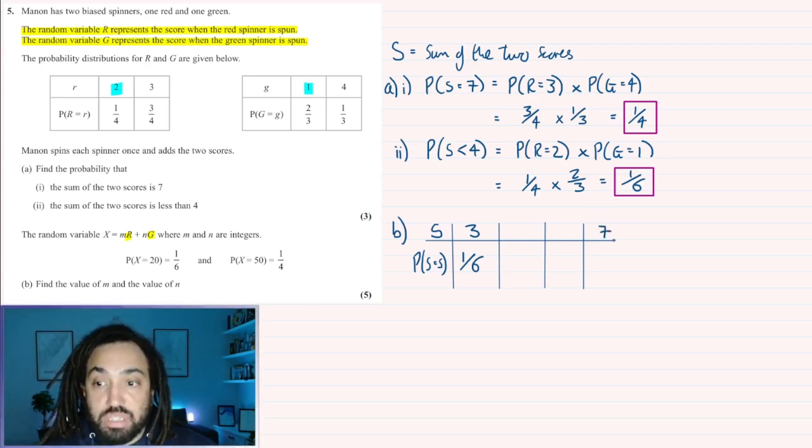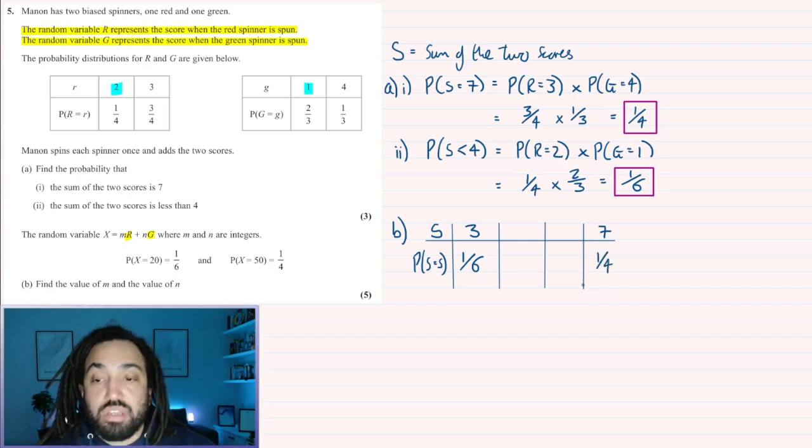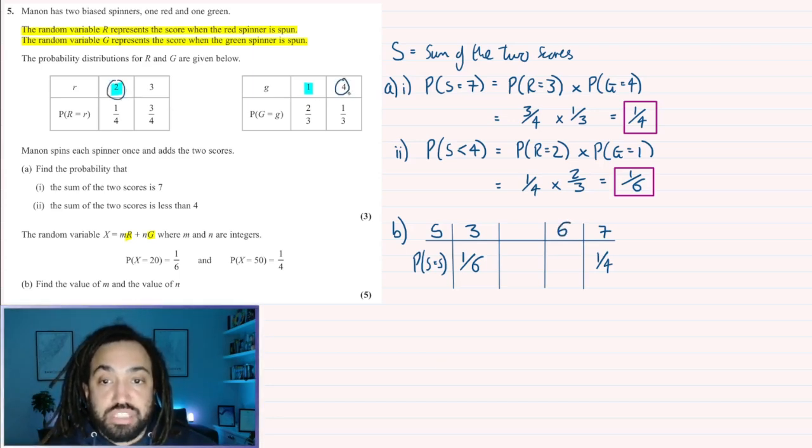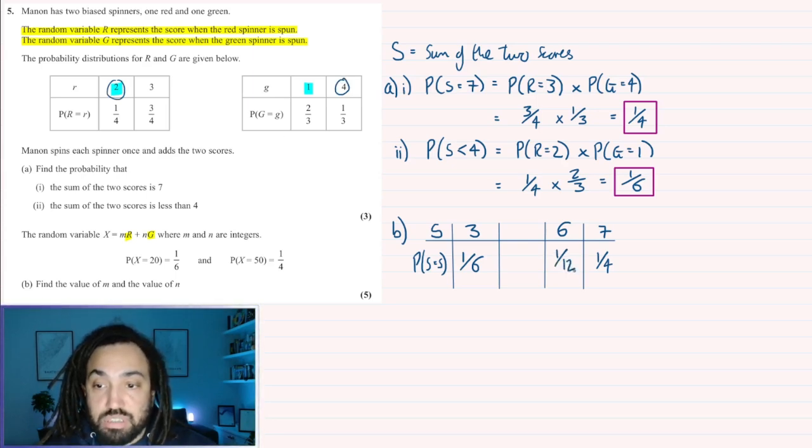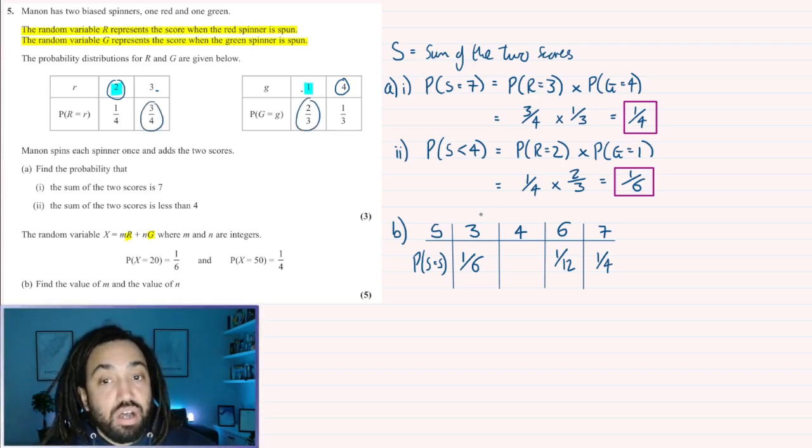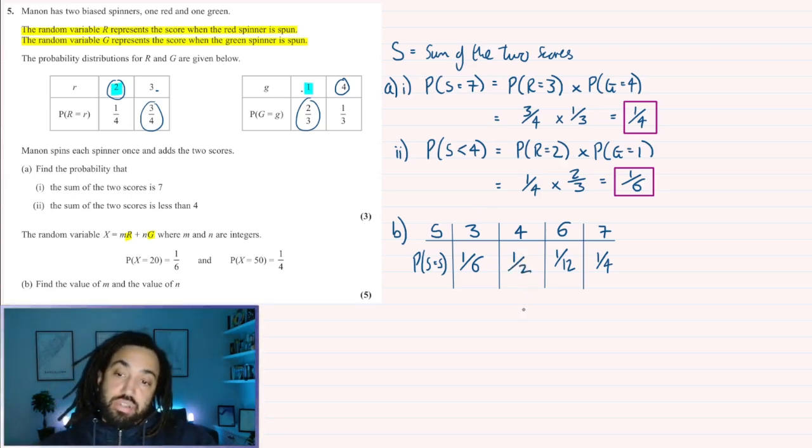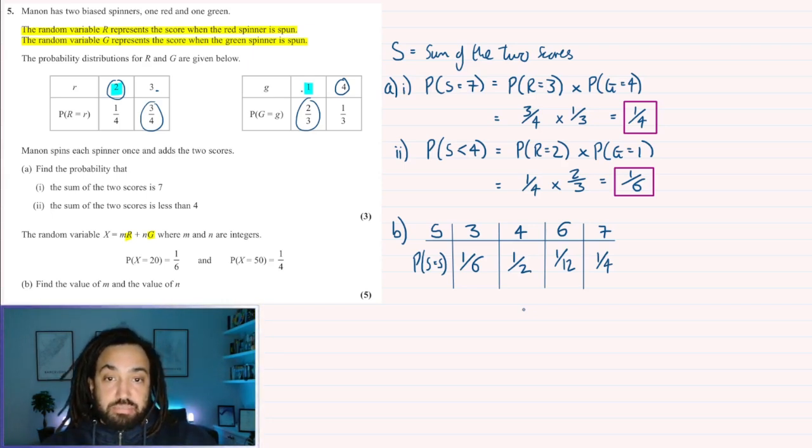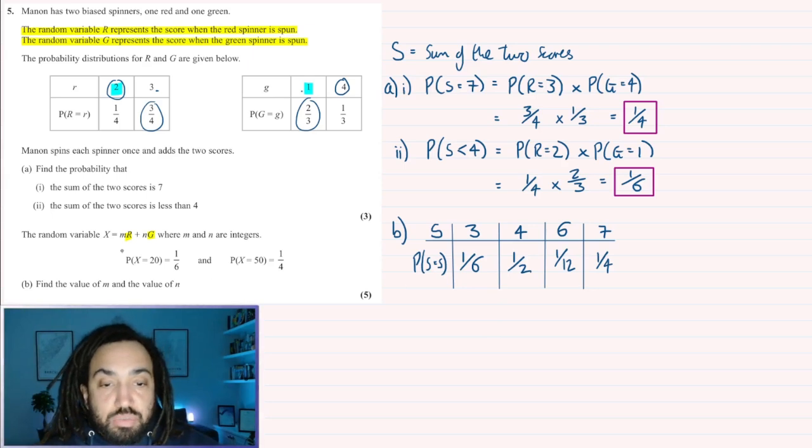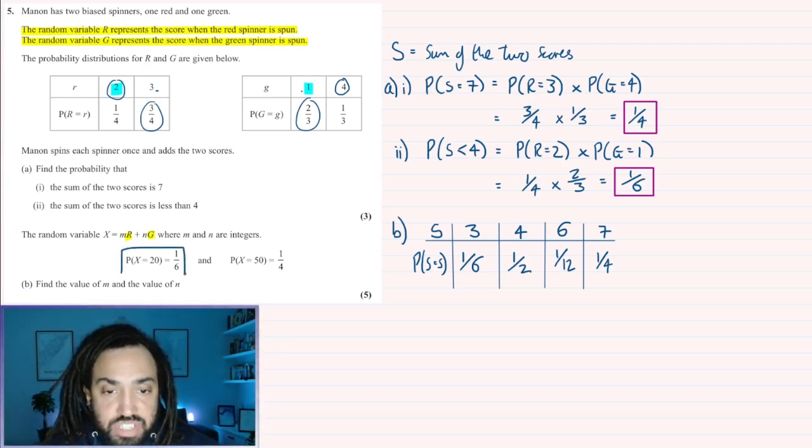What other values could we get for S? We know we can get 7, which was the largest we could possibly get. That was a quarter. We could get 6 by doing R is 2 and G is 4. Multiplying those together will give us a twelfth. The other option would be 3 and 1, which would give us 4. When you multiply these two together, we would get a half. So those are all of the options.